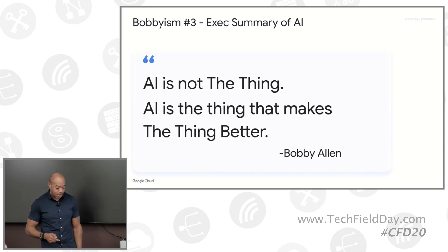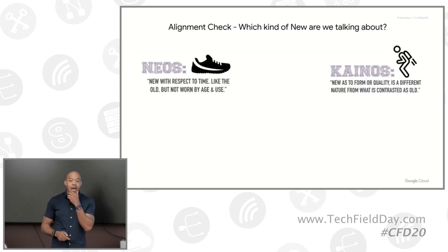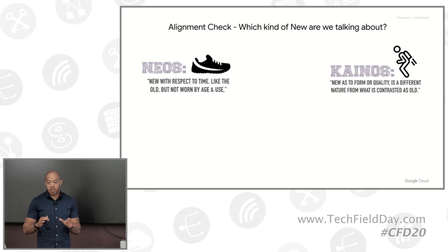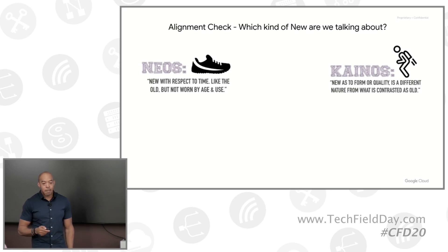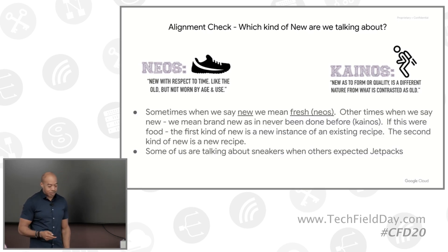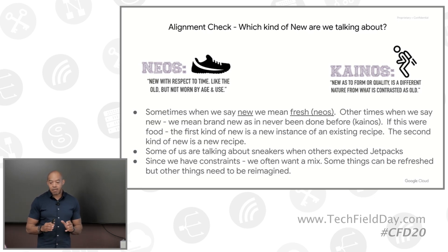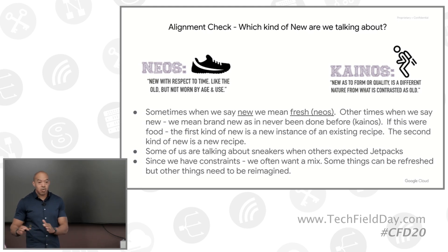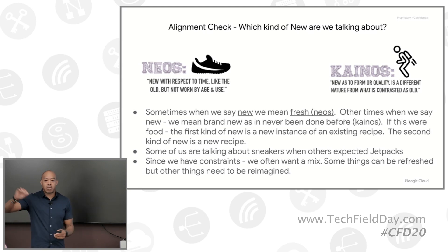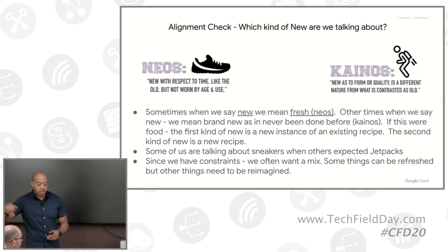I want to give you one more concept. Let's have an alignment check on where things are. English is very word-poor, so I want to give you a little bit of Greek to spice it up. There's neos and kanos — two different kinds of new. English will use adjectives, but other languages like Greek will use different words. The question we have a lot of times in our companies is: what kind of new are we talking about? Do we need new like a new pair of shoes, or new like a jetpack? Do we need a new instance of something we already understand, or something totally different — a paradigm breaker, something shifting the landscape?